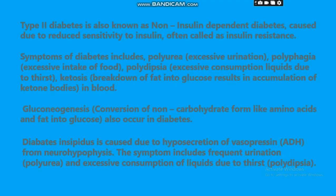Diabetes insipidus is caused due to hyposecretion of vasopressin (ADH) from the neurohypophysis. The symptoms include frequent urination, polyuria, and polydipsia — excessive consumption of liquids due to thirst.